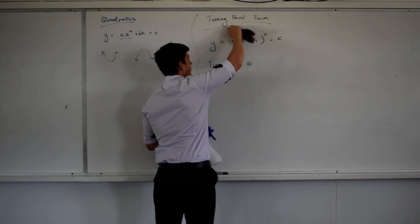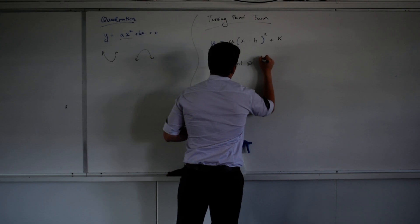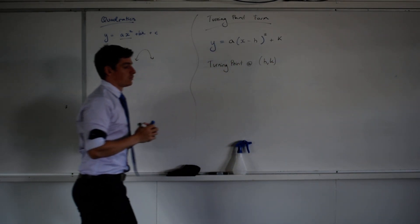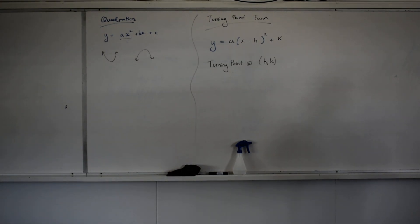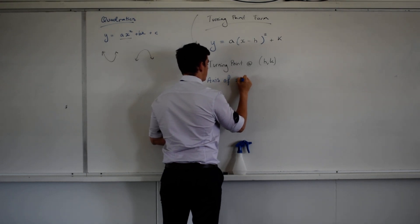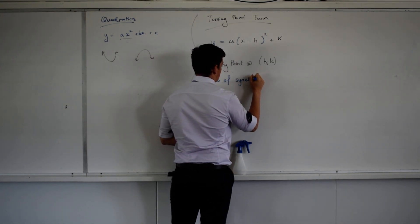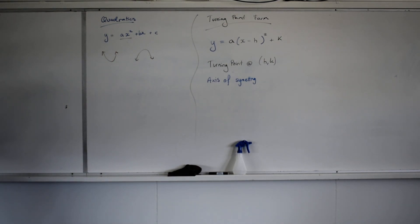What is the turning point? Turning point occurs at (h, k). This is also really good if we want to find the axis of symmetry. I can't spell symmetry, but you get the idea.